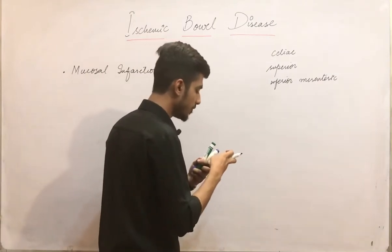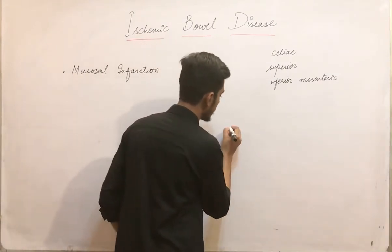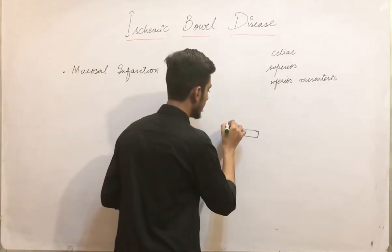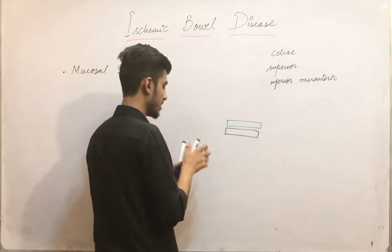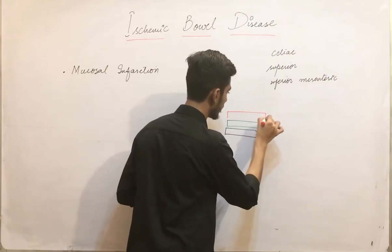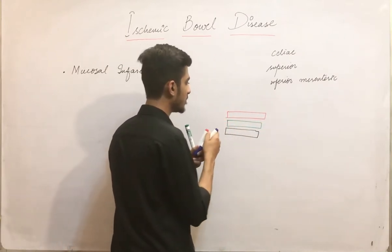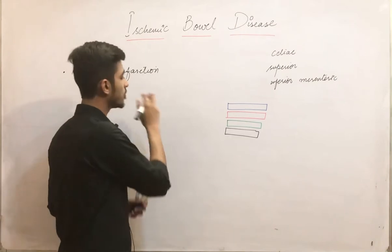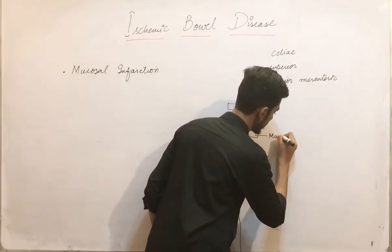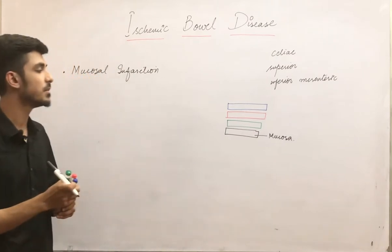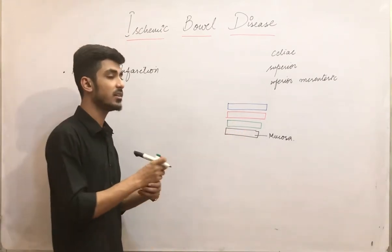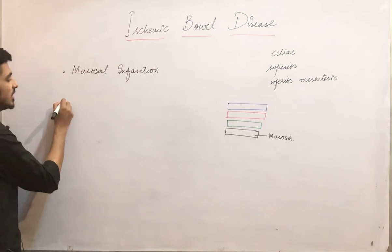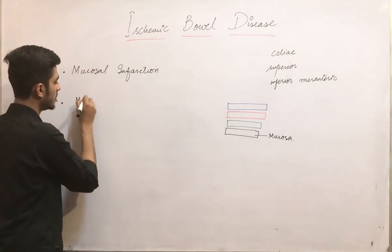Mucosal infarction, as its name indicates, is limited to the mucosal layer. There are four layers of the GIT: the mucosal layer, the submucosal layer, the muscularis propria, and the serosa. In mucosal infarction, the infarction is limited to this innermost mucosal layer. The second type is called mural infarction.